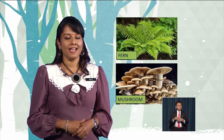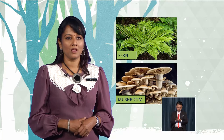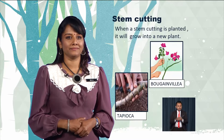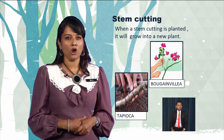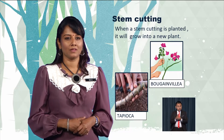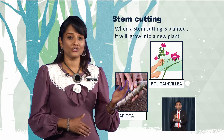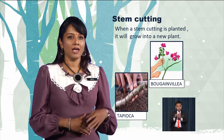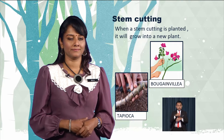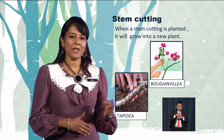Next, let's learn about stem cutting. What is stem cutting? When a stem cutting of a plant is planted, it will grow into a new plant — such as tapioca and bougainvillea. These plants reproduce through stem cutting.